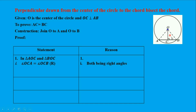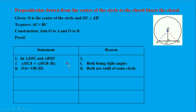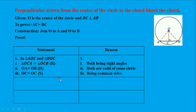We are using RHS congruence. The opposite side of the right angle is the hypotenuse. OA equals OB, because OA is the radius of the circle and OB is also the radius of the circle. So OA equals OB — both are radii of the circle.